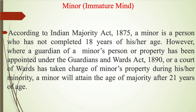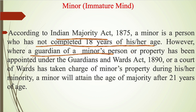So what is a minor? According to the Indian Majority Act 1875, a minor is a person who has not completed 18 years of his or her age. However, where a guardian of a minor's person or property has been appointed under the Guardians and Wards Act 1890, or a court of wards has taken charge of the minor's property during his or her minority, a minor will attain the age of majority after 21 years of age.